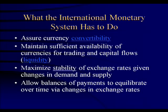What does the international monetary system have to do? It has to assure currency convertibility. It has to maintain sufficient availability of currencies for trading and capital flows, also called liquidity. It has to maximize stability of exchange rates given changes in demand and supply. And it has to allow balances of payments to equilibrate over time via changes in exchange rates.